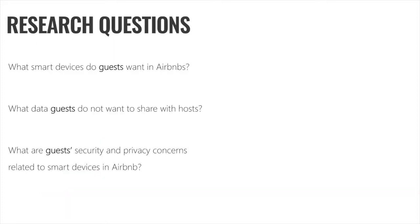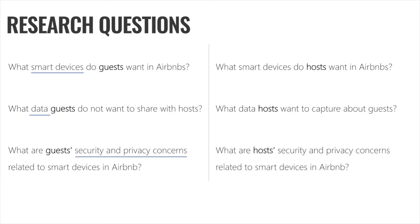In our survey, we focused on three things: smart devices in Airbnb, data sharing in Airbnb, and perceived security and privacy concerns. More specifically, our questions were: what smart devices do guests want in Airbnb, what data they do not want to share with their hosts, and what are their security and privacy concerns related to smart devices in Airbnb? We asked similar questions to hosts, and then we looked at both their views in terms of data sharing and data preferences to see where their views match or where they conflict.